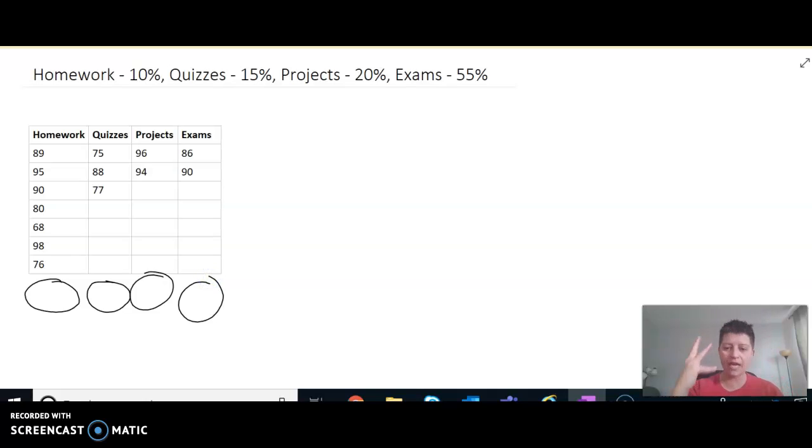We're going to find the average of each of these categories. We have four categories. We need four category averages so that we can take the homework average times 10%, the quiz average times 15%, project average times 20%, and exam average times 55%. That is our process. Okay. Dealing with the homework.